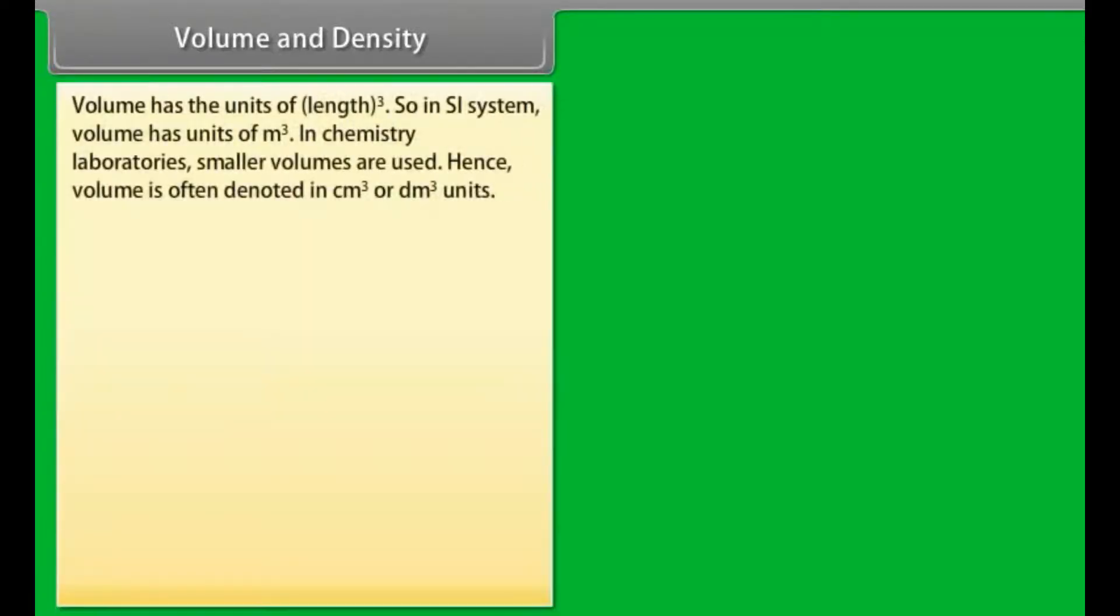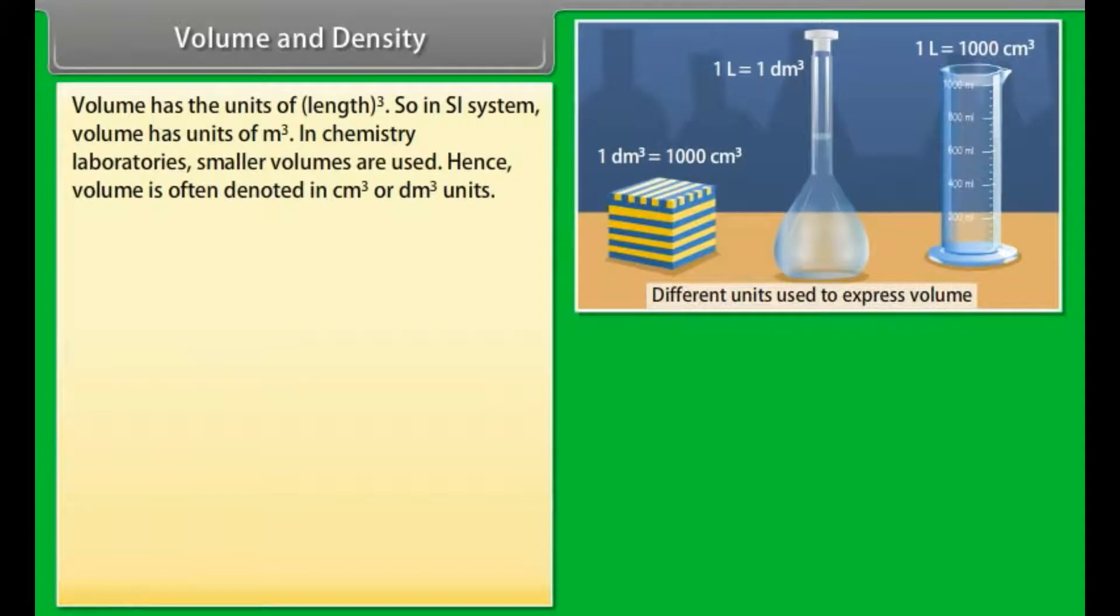Volume and Density: Volume has the units of length raised to the power 3. So, in SI system, volume has units of meter cube. In chemistry laboratories, smaller volumes are used. Hence, volume is often denoted in centimeter cube or decimeter cube units. A common unit, liter (L), which is not an SI unit, is used for measurement of volume of liquids.